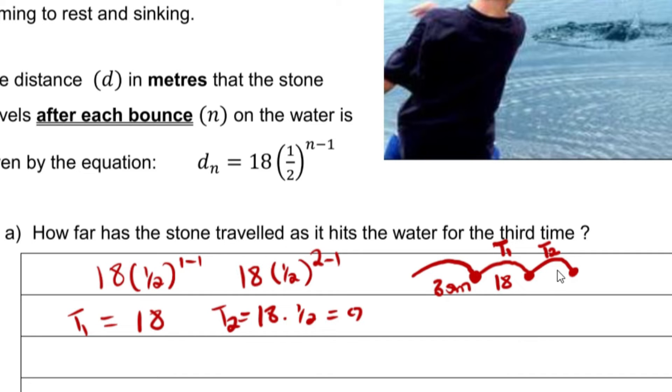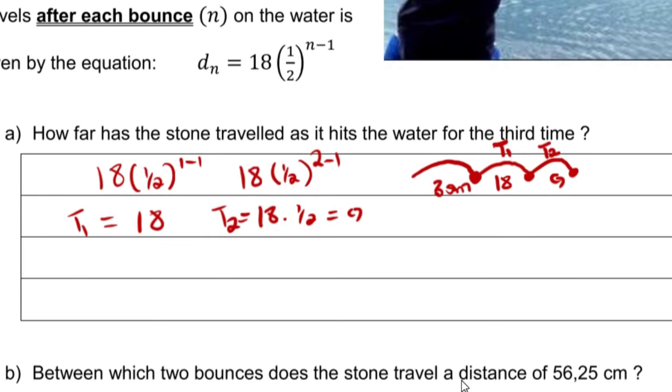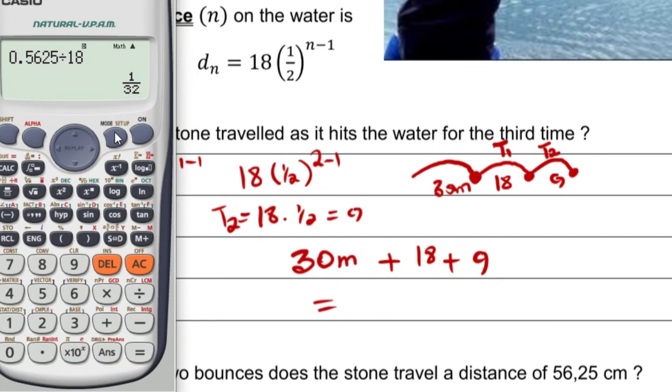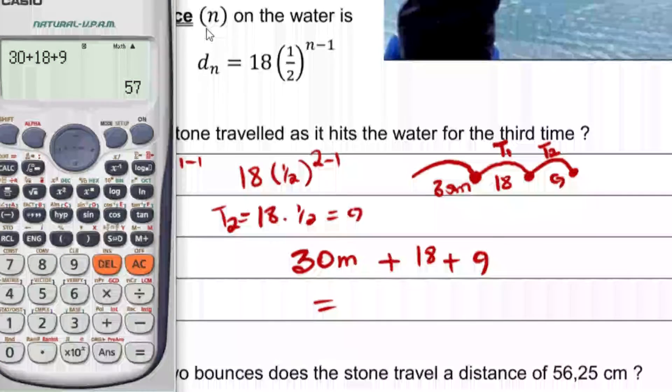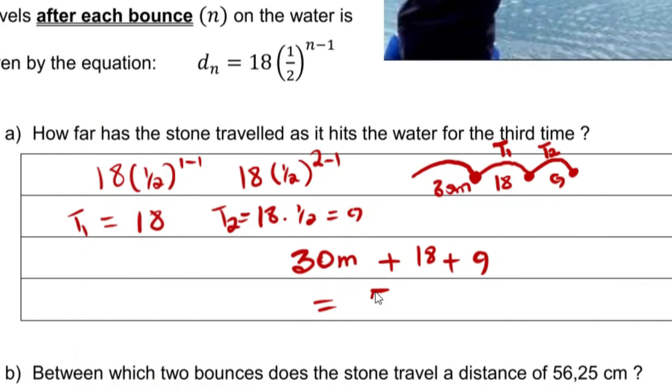So we have d_1 to be 18 and d_2 to be 9. Since they want how far this stone is going to travel, all I need to do is add the original distance it traveled before the first bounce, which is 30 meters, plus 18, plus 9, and that will give you 57. So this stone is going to travel 57 meters.